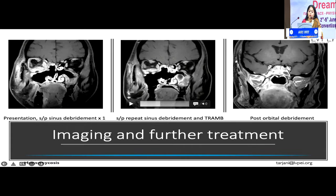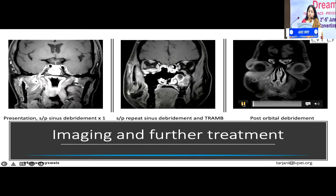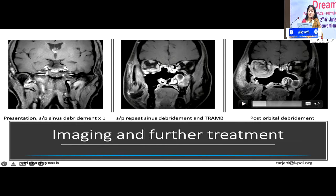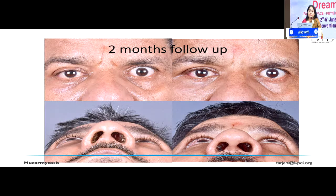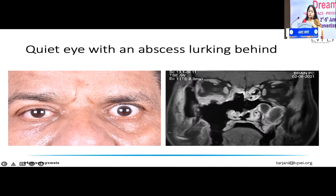We went ahead and did an orbital debridement for him — removed everything from there. You can see that the orbit looks much larger compared to before because we've decompressed the floor; we removed the floor and medial wall and debrided all necrotic tissue from that area, giving the orbit more space. Any black area on MRI suggests dead tissue — no amount of IV Amphotericin B or injection behind the eye will affect dead tissue. Dead tissue needs to be removed, similar to the surgical principle of gangrene where you amputate the dead part. At two months follow-up, the proptosis from orbital involvement has resolved after the localized debridement. You can have a quiet eye but a small abscess lurking inside — hence reading the MRI correctly is very important.